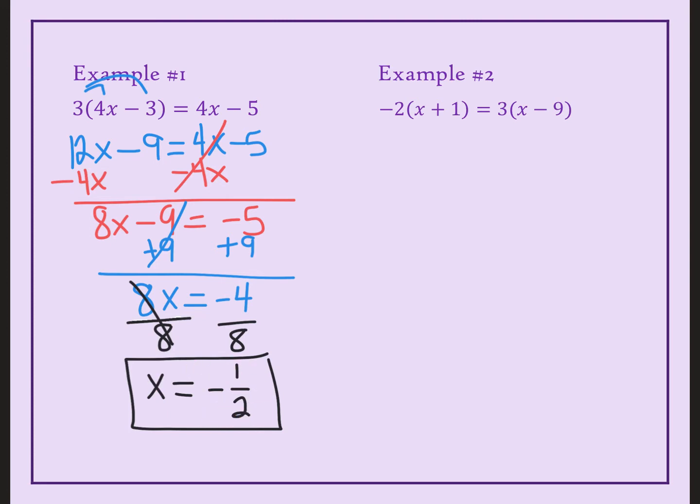Let's try example number 2. First, we see these parentheses. Whenever we see parentheses, we look in front of the parentheses. If there's a plus sign, we get to drop the parentheses. But if there's anything else besides a plus sign, we're going to have to distribute. So we're going to start off by drawing to remind ourselves that we need to multiply to everything inside the parentheses. So negative 2 times x, negative 2 times positive 1. Now on the other side, 3 times x and 3 times negative 9.